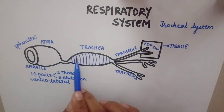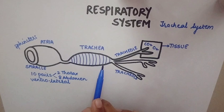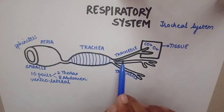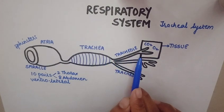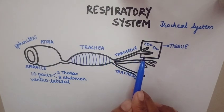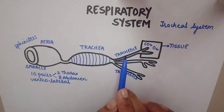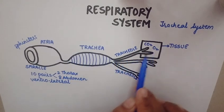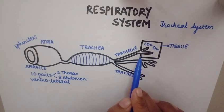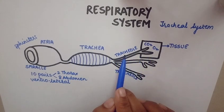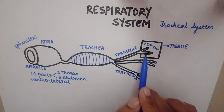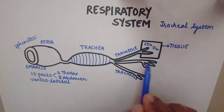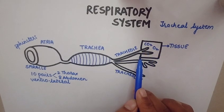There is a tube called the trachea. After the trachea, there are certain branches called tracheoles. The trachea is further divided into these branches, which are the tracheoles.